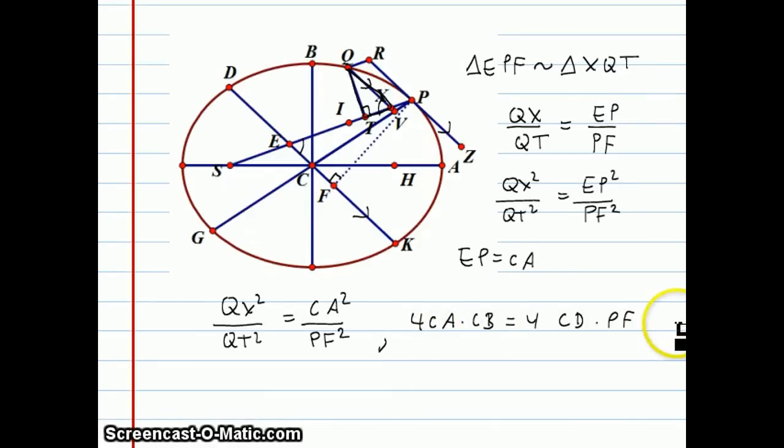So I've put down here this sort of consequence of that parallelogram rule, the equal area parallelograms around the ellipse. He uses that here. You could rearrange this as a proportion, sort of the opposite of cross-multiplying. CA over PF equals CD over CB. So those are equivalent.